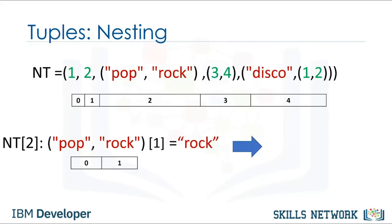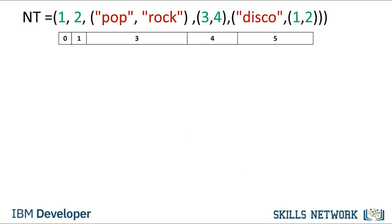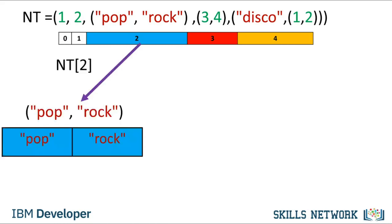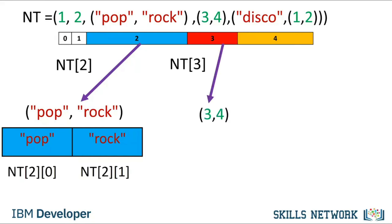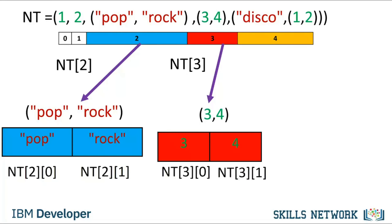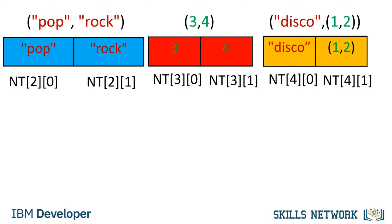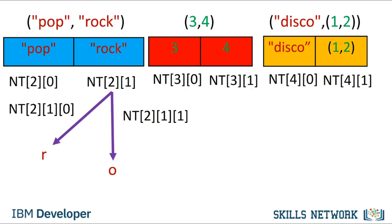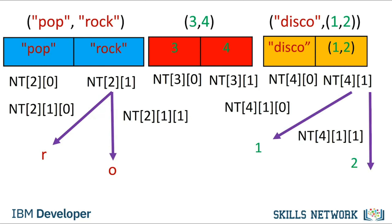For example, we could access the second element and apply this indexing directly to the tuple variable nt. It is helpful to visualize this as a tree. The tuple has the following indexes. The tuple at index 2 contains a tuple with two elements — we can access those two indexes. The same convention applies to index 3. We can even access deeper levels of the tree by adding another square bracket, accessing different characters in the string or various elements in nested tuples.